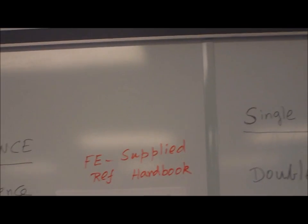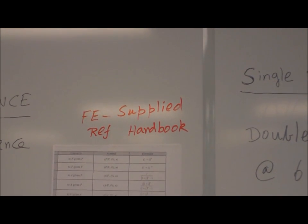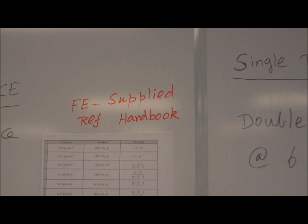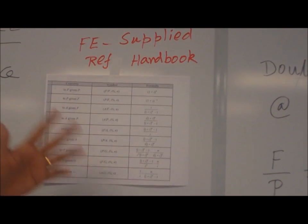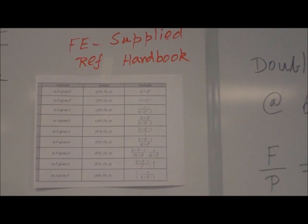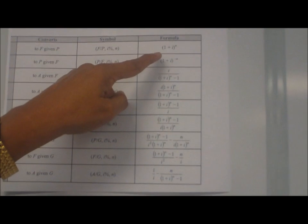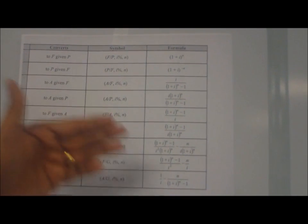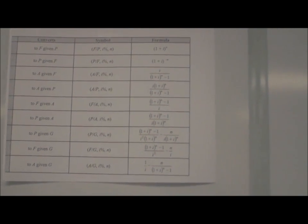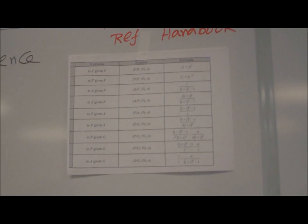Now to do that, the formulas are given by FE Supply Reference Handbook. When you write the FE exam, you will be given a handbook for reference. That book has all these formulas. So you don't have to memorize them. For example, if you want to find what is F over P, simply equal to one plus I power N. So similarly for various ratios, you can calculate using these relations. These relations are computed and given for you in a table form also.